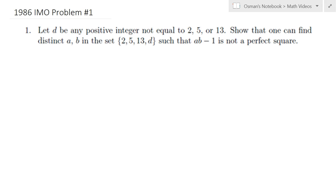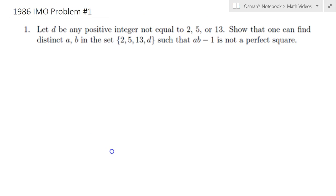The statement of the problem is basically that one can always find two elements in this set such that ab minus 1 is not a perfect square, and this is regardless of the choice of d.